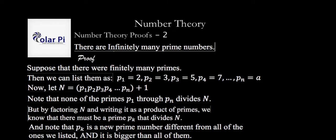Because while P sub K divides N, we know that none of the ones we listed divide N. So this prime P sub K must be a different prime, but also it's bigger than all of them because we wrote P1, P2, P3, all the way through PN in order from the smallest to the biggest. And we just found one that's not in that list.